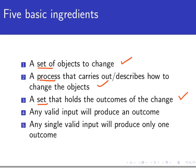Thirdly, there is another set that holds the outcomes of that change. And then fourth and fifth are two important properties. Fourth, any valid input to the process needs to produce an outcome. And finally, any single valid input to the process produces only one outcome and not two or more. So those five ingredients are the keys to defining a robust notion of a function that will stand up to the use to which we will put it. Thanks for watching and stay tuned.